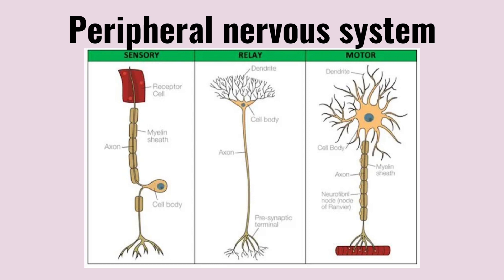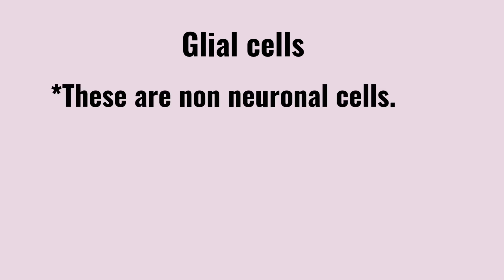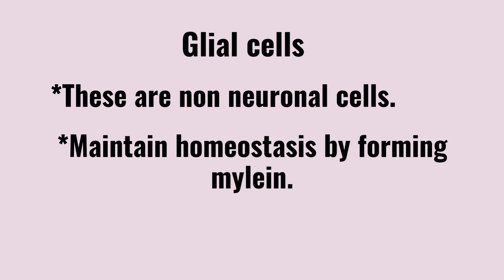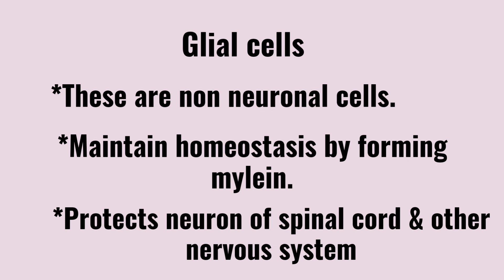We also have very important cells called glial cells. Glial cells are non-neuronal cells. They help maintain the nervous system. The glial cells form a myelin sheath, which you need to know about when studying neuron structure. Glial cells provide neuronal protection and homeostasis, protecting the brain, spinal cord, and neck.